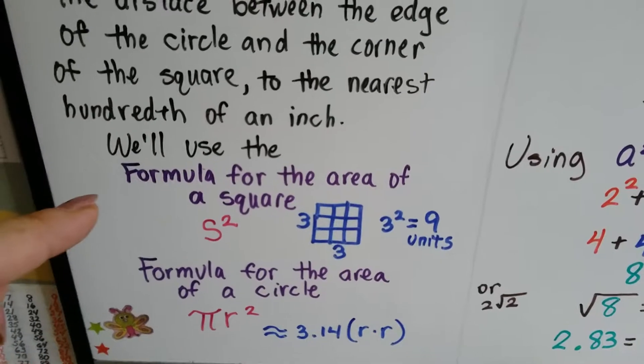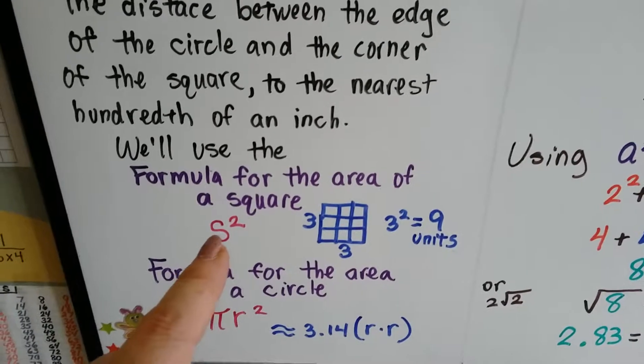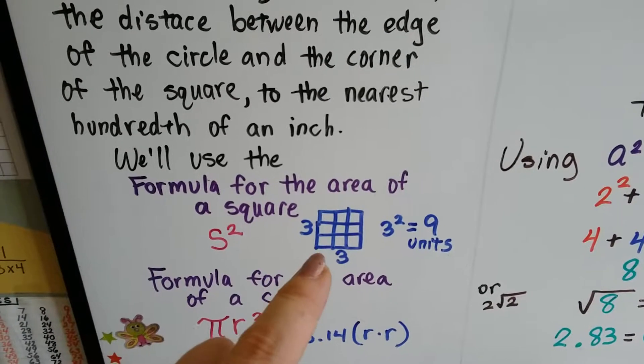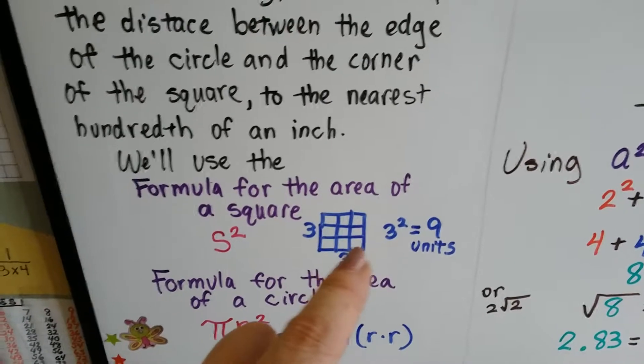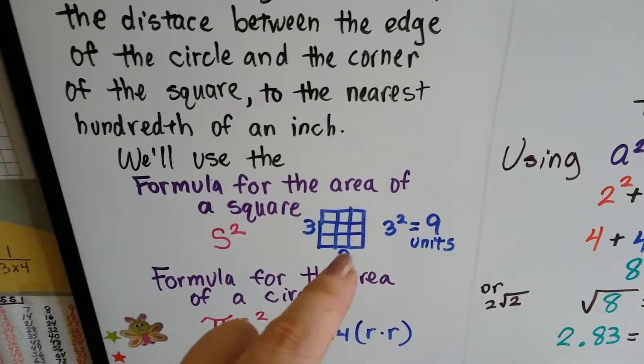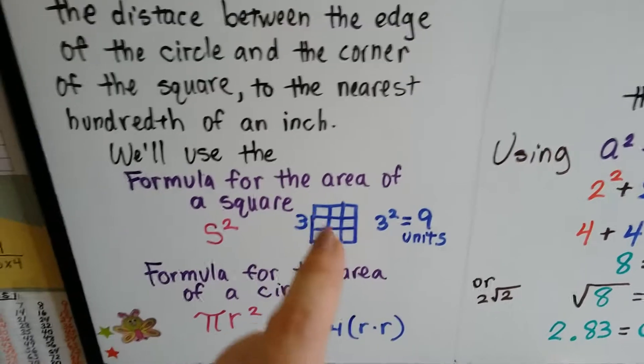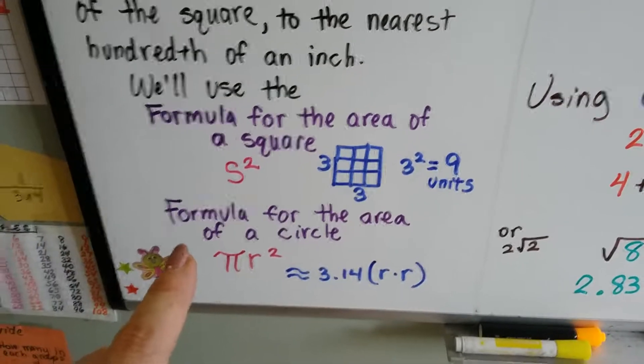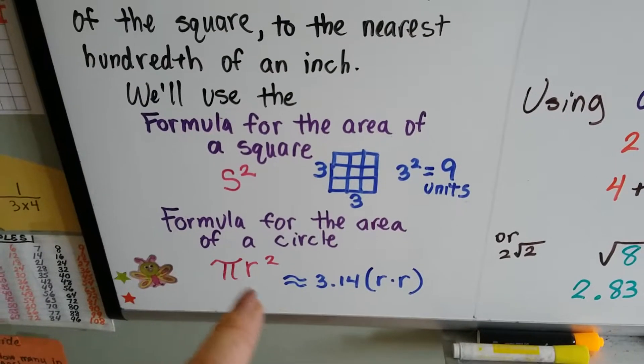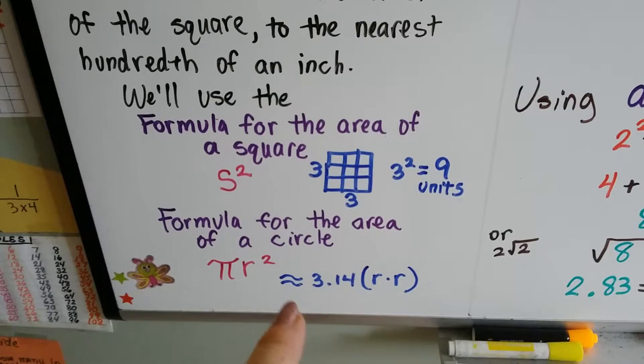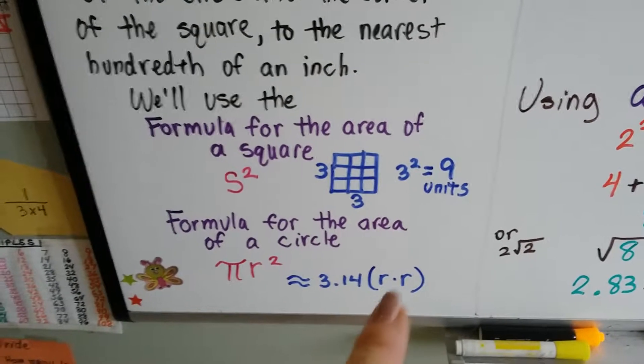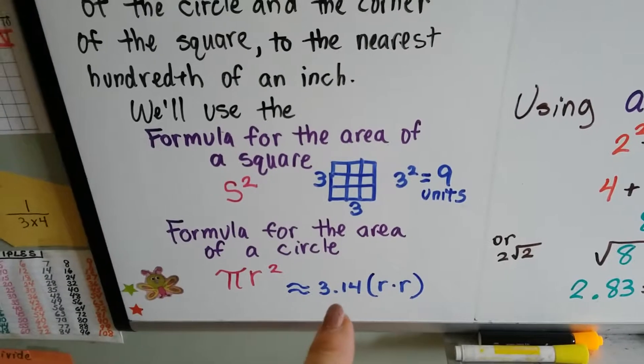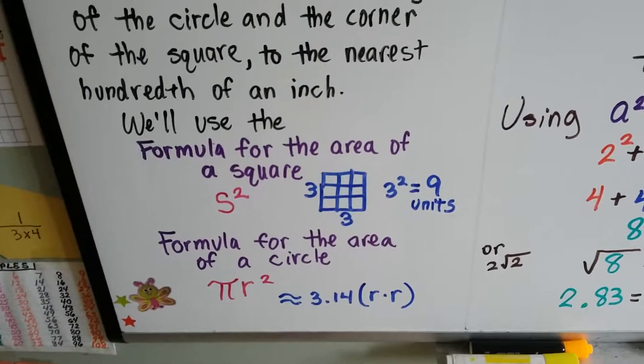We're going to use the formula for area of a square, which is s to the second power. That's side times side. If there's three on this side and three on this side, we can do three times three or three squared. That's nine units here. We're also going to use the formula for the area of a circle, which is pi r squared. So that's approximately 3.14 times the radius times the radius. And it's approximately because you know how long pi is. It goes on forever.